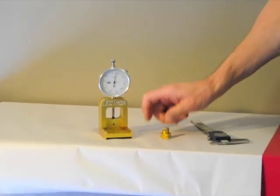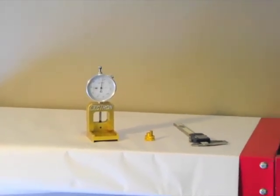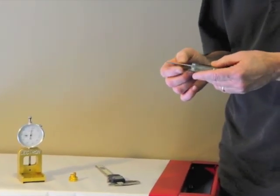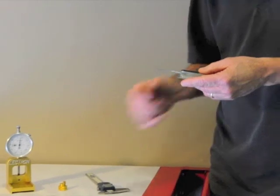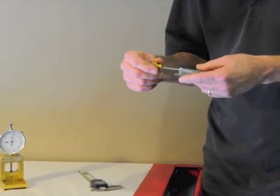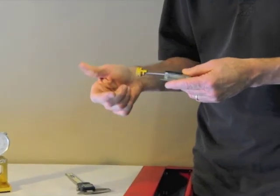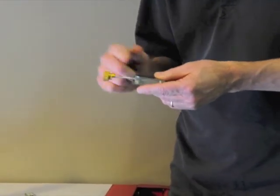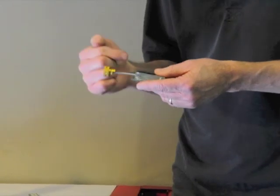Now, always remember that when you are adjusting the metering rod, it's always only for idle. The metering rod itself, when you adjust it, when you move it in, you're richening it up. When you move it out, you're leaning it out. Out lengthens the rod, in shortens the rod.